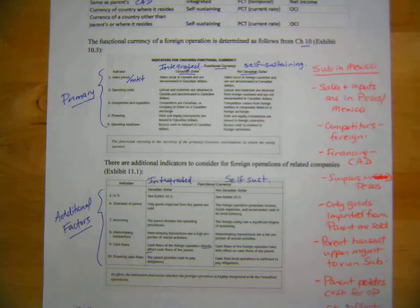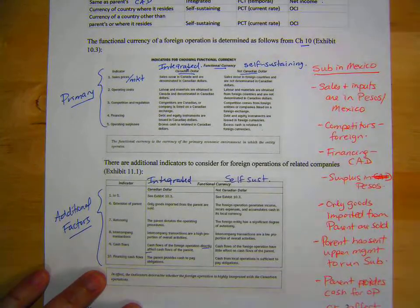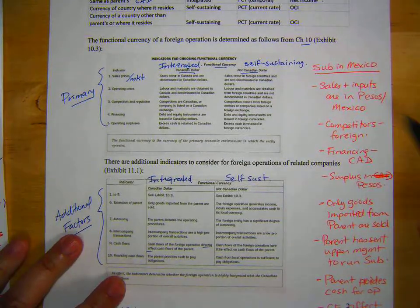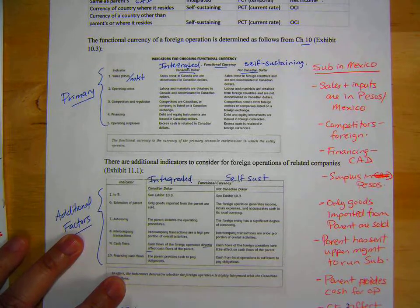Okay, welcome back to chapter 11. We are on page 2 and we're doing this little example that I put in. So our sub is in Mexico and here's different aspects about it and you had to decide if it was integrated or self-sustaining.